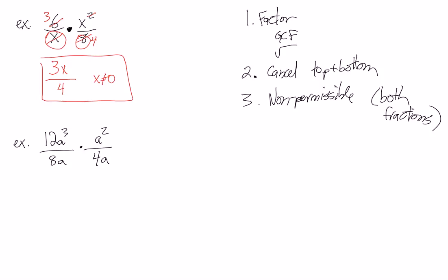Let's do another one. In this case we've got 12A cubed over 8A times A squared times 4A. The question can be written with times as a dot, the X symbol, or brackets — they're all the same thing for multiplying. So in this case we're ready to cancel. We cancel a 4 on the bottom with a 4 on the top, leaving us with a 3. We've got 1A on the bottom and 2 A's on the bottom, which cancels with the other 2 on the top. So our final answer is 3A cubed on the top and an 8 on the bottom.